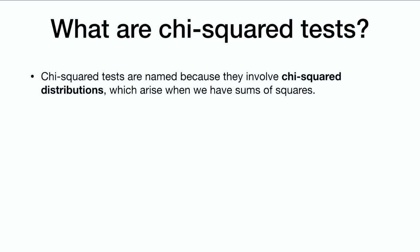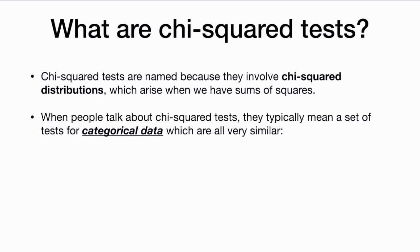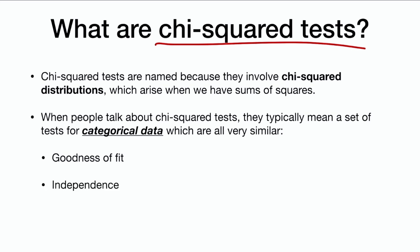Chi-squared tests are named because they involve chi-squared distributions. Chi-squared distributions arise when we have sums of squares, so we'll see where we're calculating sums of squares. When people talk about chi-squared tests, they typically mean a very specific set of tests for categorical data which are all very similar. Chi-squared distributions are used elsewhere in statistics too, but if you just hear 'chi-squared tests,' you can assume it's going to be one of the tests we're talking about today — a goodness-of-fit test or tests of independence and homogeneity, which are really the same test.